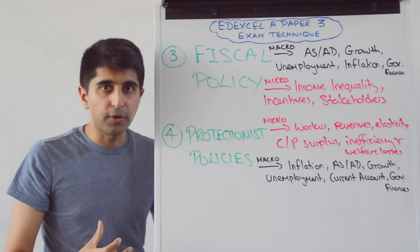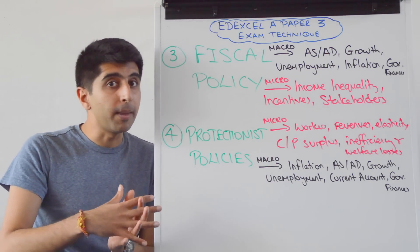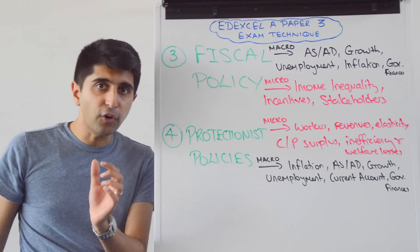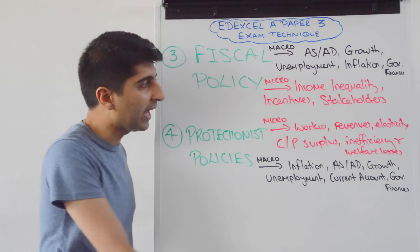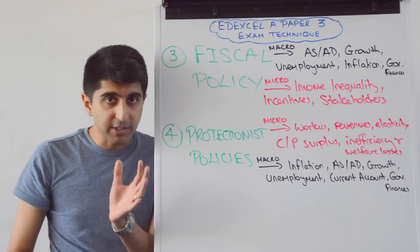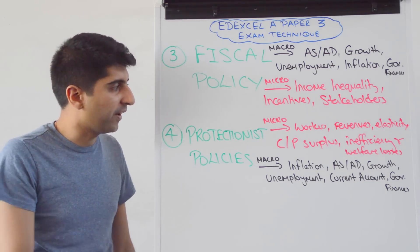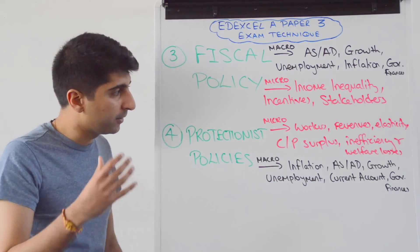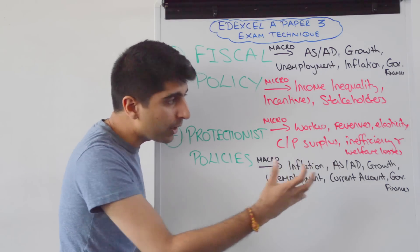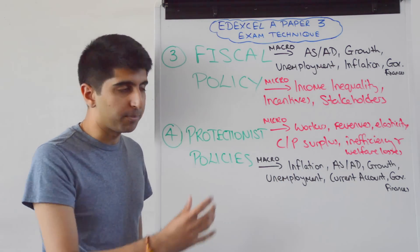If we look at protectionist policies, maybe the natural place to go is micro-effects first. Look at the impact on individual workers who were able to keep their jobs, and the impact on both domestic producer revenues and foreign producer revenues — clear micro-effect. Elasticity of demand and elasticity of supply: how the impact of a tariff in reducing imports is dependent on both PED and PES. The impact on consumer and producer surplus, inefficiency of these policies, any deadweight welfare losses — absolute classic micro-effects when it comes to protectionist policies.